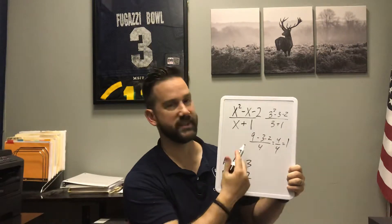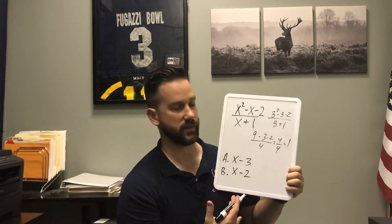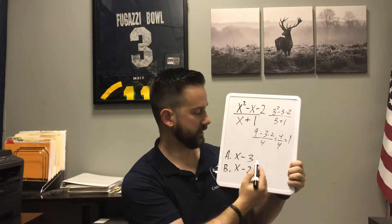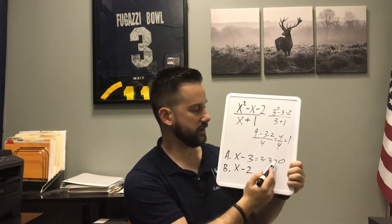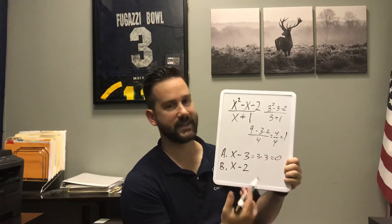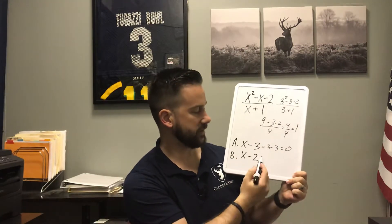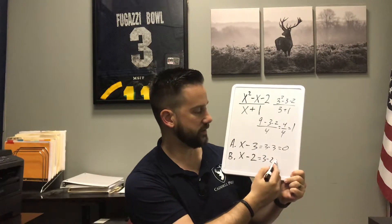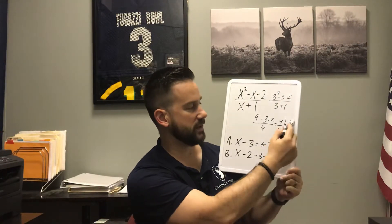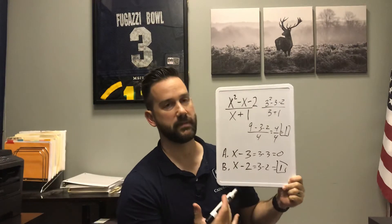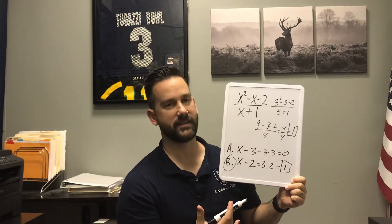So if one of the answer choices is equivalent to this expression, it should also equal 1 when x is 3. Looking at the first choice, x minus 3 gives us 3 minus 3, which is 0 — not the same as 1. Trying the next one, x minus 2 gives us 3 minus 2, which equals 1. That matches, so choice B is the answer.